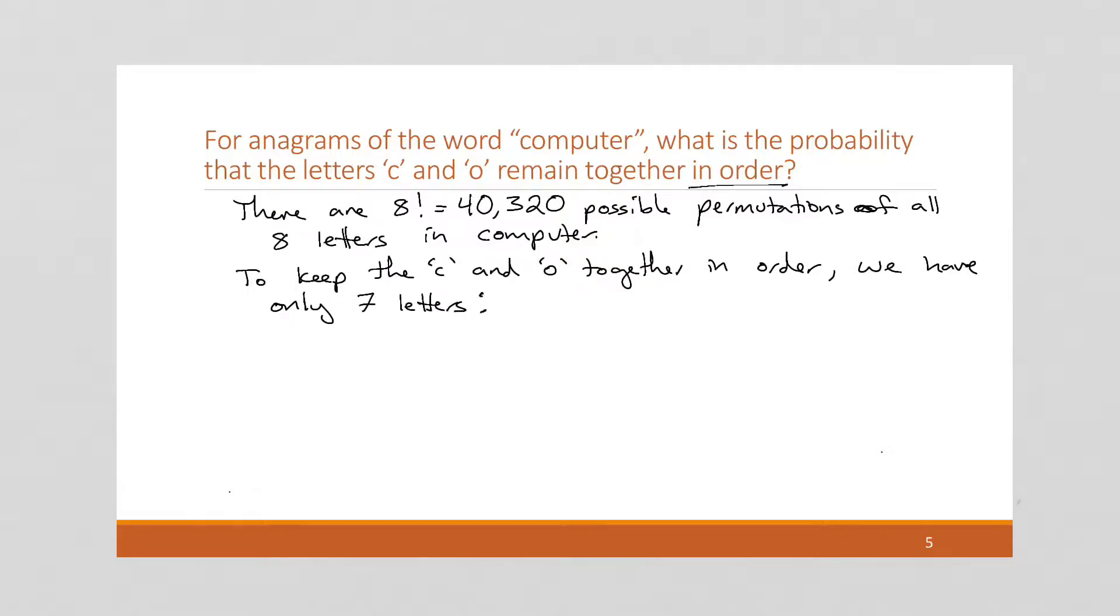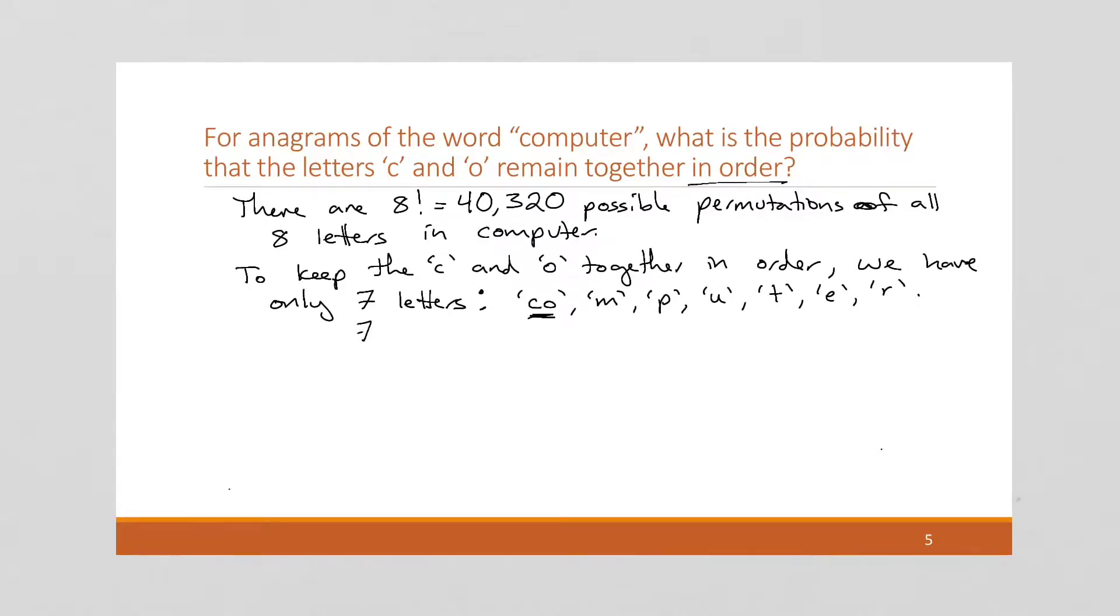And these letters are going to be C, O, M, P, U, T, E, and R. So by combining C and O together, it can count sort of as a single letter. And we know that there will then be seven factorial ways of doing that. So there's 7! ways to do this.